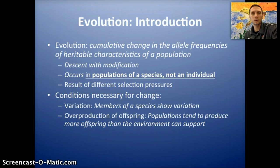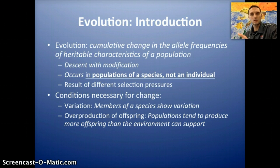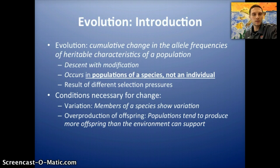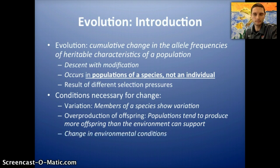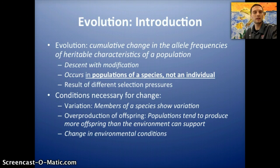Additionally, there's generally going to be an overproduction of offspring. For animal species, plants, and different species, there's generally going to be more offspring produced than the environment can support, and what this leads to is competition. Some individuals are going to be able to compete or have a better chance of survival than others. If there's some sort of change in environmental conditions or a selective pressure, this then — because of that competition — allows some individuals to have a better chance of survival than others.